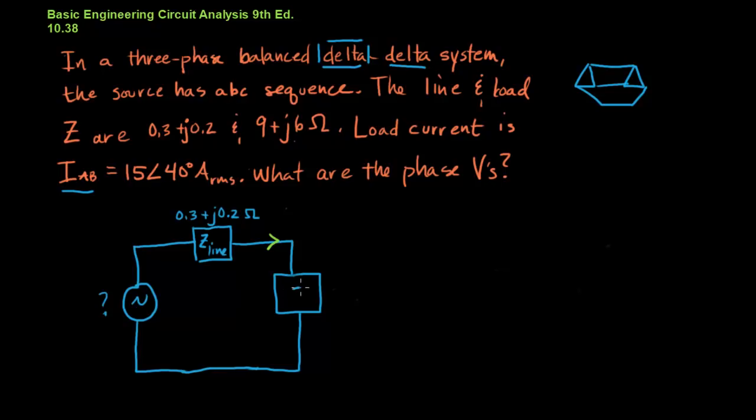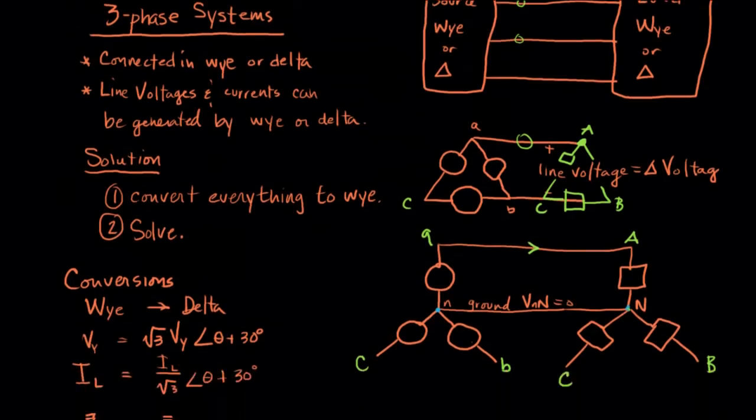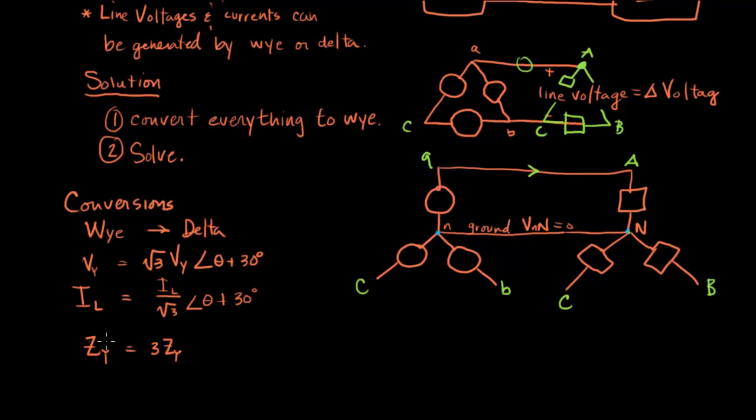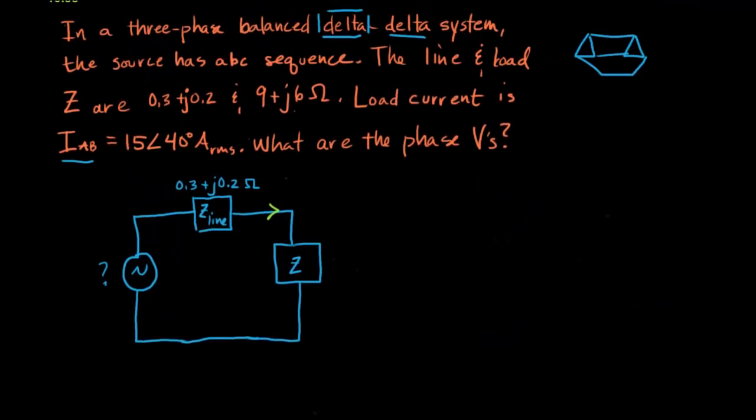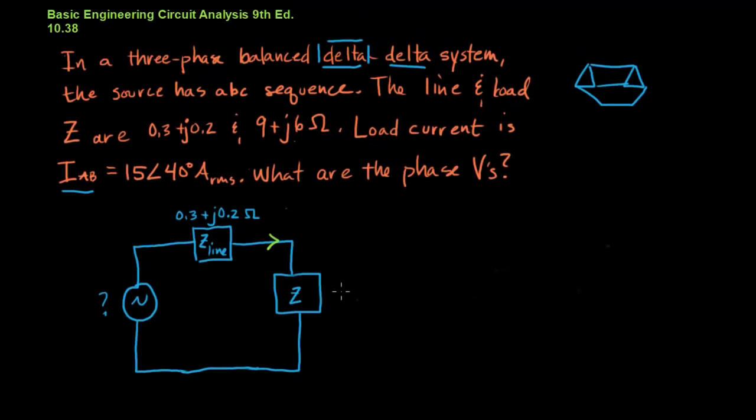But the load impedance does change. And the load impedance changes by a factor of one-third. Again, that goes back to our little cheat sheet here. If we had a delta load, we would have to take one-third of it to get an equivalent Y load. Luckily, they've set this problem up so that it's very easy to do that. It's just 3 plus j2.